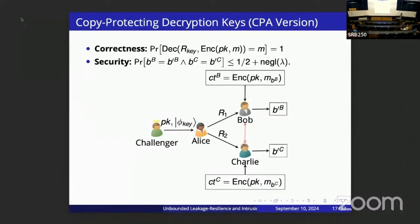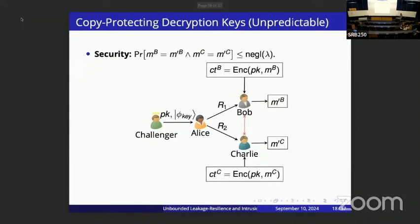We require they cannot do so simultaneously with probability better than one-half plus negligible. The baseline security is one-half because Alice can give her key to Bob who decrypts correctly while Charlie randomly guesses. In the unpredictability setting, Bob and Charlie get encryptions of random long messages and try to guess the full message — this is weaker than CPA since they could possibly learn parts of the message.